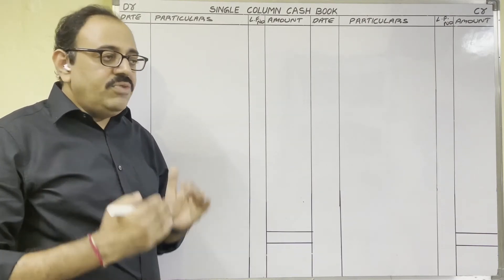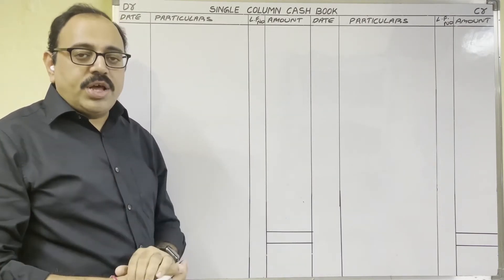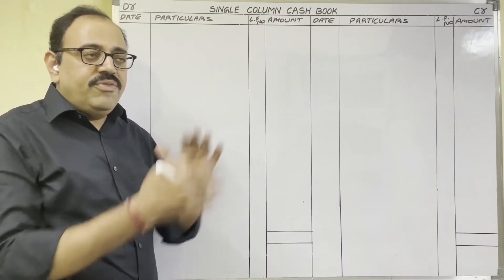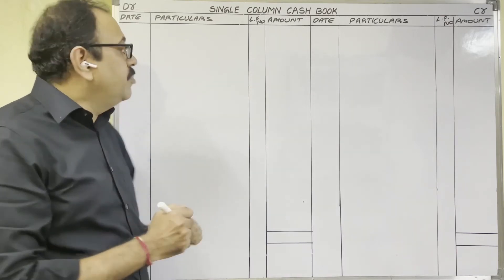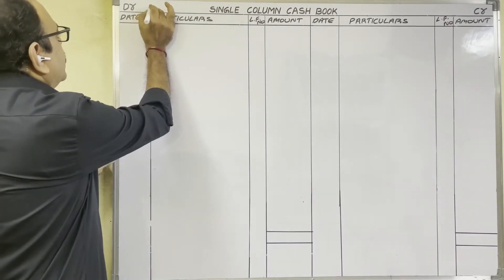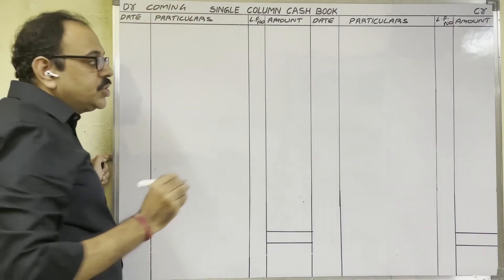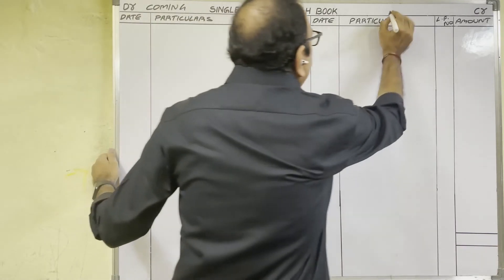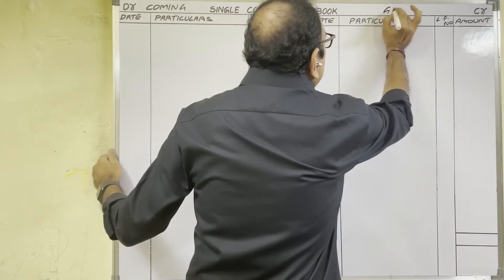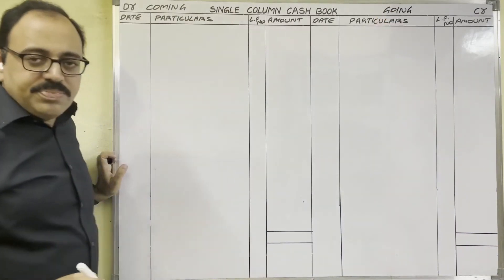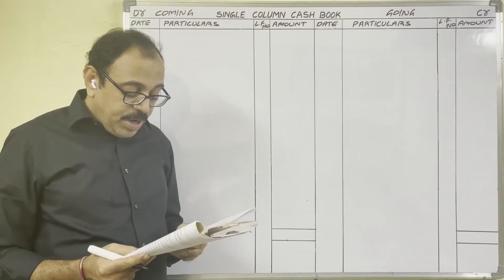We should assume that we are preparing this book in the firm's books, so think from the firm's point of view. If cash is coming into the firm, write it on the debit side. If cash is going out from the firm, show it on the credit side. Let us start the problem.